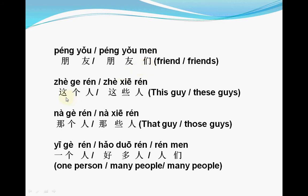Next: 这个人 (zhège rén) is a singular — one person. If there is more than one person, we say 这些人 (zhèxiē rén). We change 个 (gè) to 些 (xiē). So: 这个人 → 这些人. Similarly, 那个人 (nàge rén) becomes 那些人 (nàxiē rén).